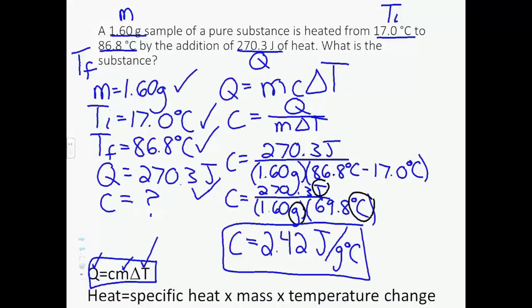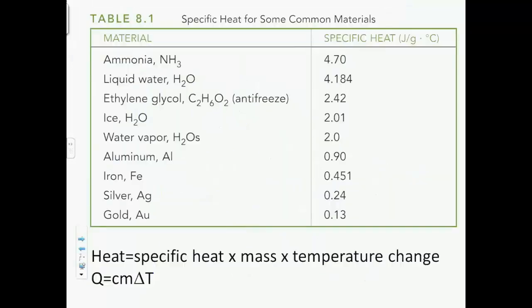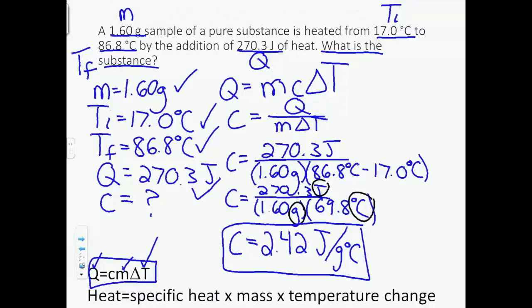We're done, right? We answered the question. Wait, we didn't. The question said, what is the substance? It didn't say, what is the specific heat? So if our specific heat is 2.42 joules per gram degrees Celsius, we can come to our next slide and go 2.42 joules per gram Celsius. So that means our sample is ethylene glycol or antifreeze.